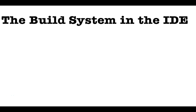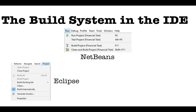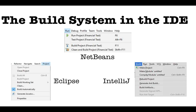Hiding behind every major IDE is a build system. When you create a project in one IDE, the format of that project is not compatible with other IDEs. Some of these IDEs have converters for other project formats, but not all do. And then, what about the bare-knuckle programmer who just uses a text editor and works from the command line?